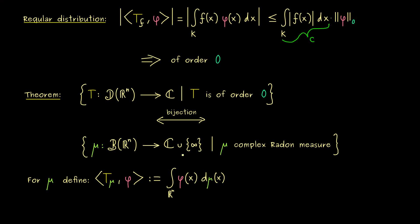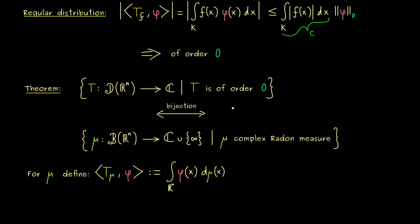So this is a well-defined integral, and we only integrate over a compact set, namely the support of φ. So what we get out here is a finite complex number. And now it's not hard to show at all that this is indeed a distribution of order zero.